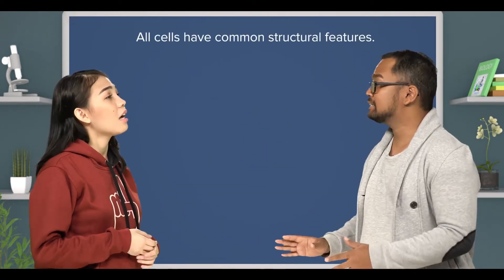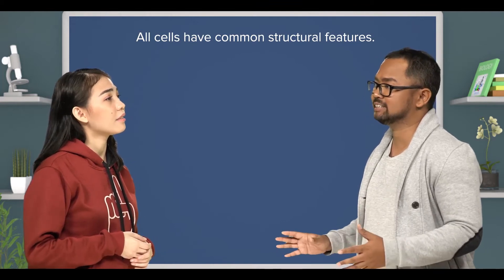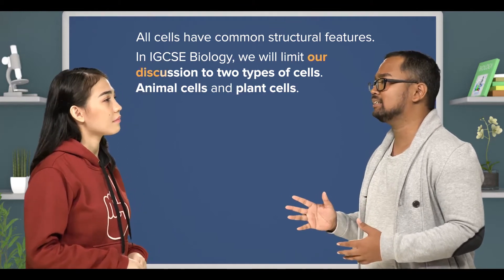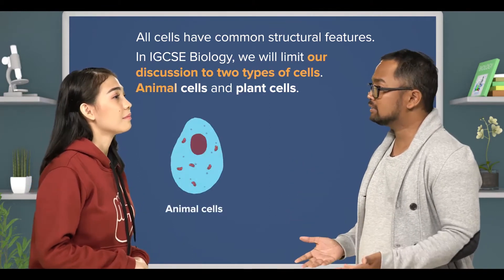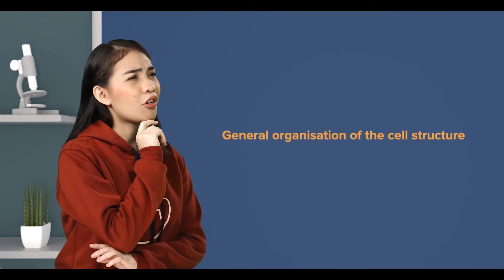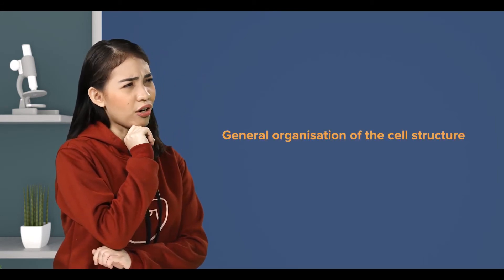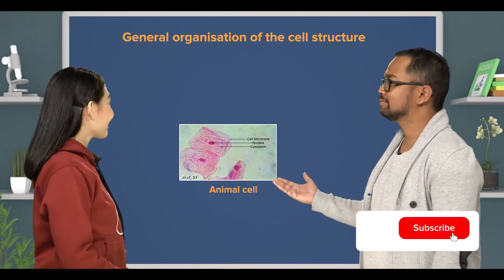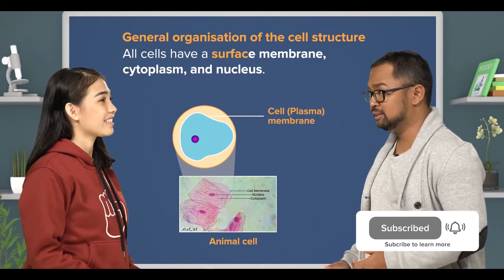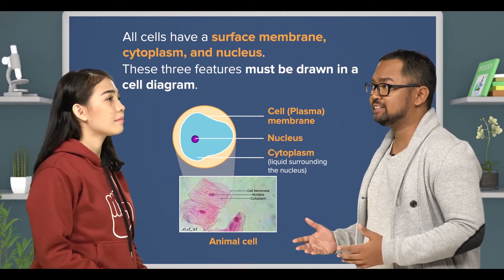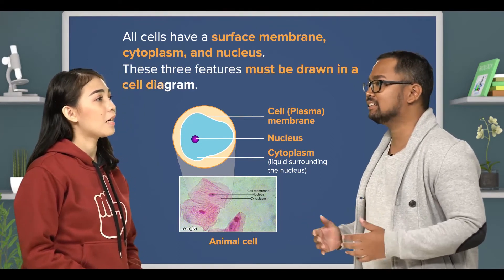Indeed, all cells have common structural features, but in IGCSE biology we will limit our discussion to two types of cells: animal cells and plant cells. This is an animal cell. All cells have a surface membrane, cytoplasm, and nucleus. These three features are the features that must be drawn in a cell diagram.